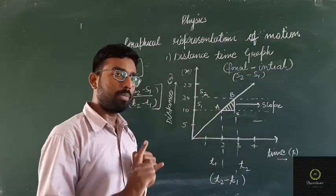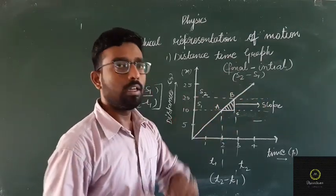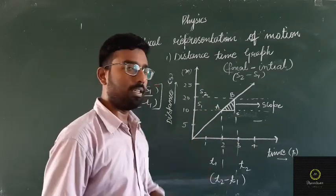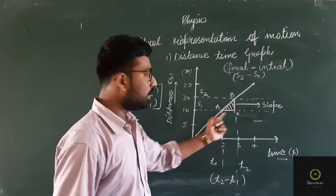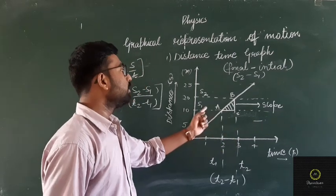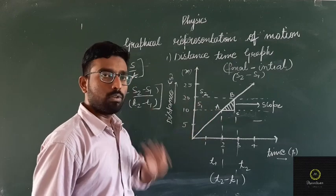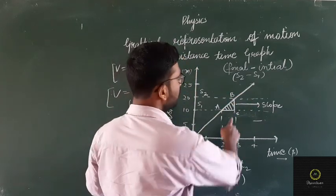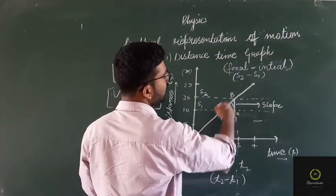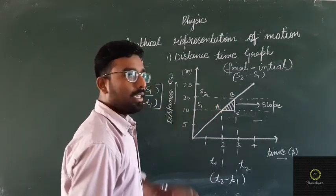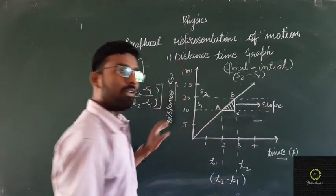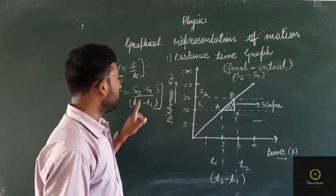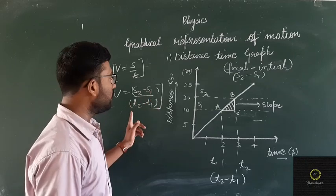So to summarize: at rest, there is no motion and we get a straight line parallel to the time axis. For uniform motion, joining the coordinates gives a line inclined to the time axis. Take two points A and B, draw normals to the time axis, mark S1, S2, T1, T2. The slope of the line gives speed: V equals (S2 minus S1) upon (T2 minus T1). In the graph, S2 minus S1 corresponds to BC and T2 minus T1 corresponds to AC.